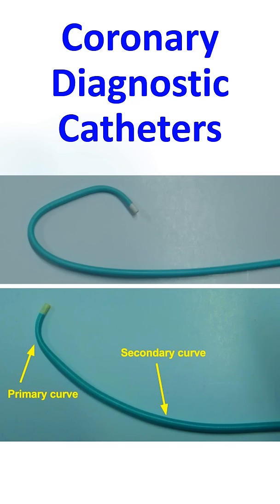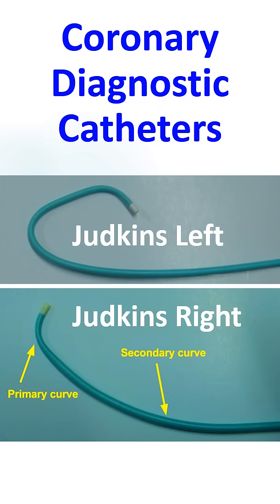The catheter sizes are referred to depending on the secondary curves and the coronary artery for which it is meant — for example, JL4. Here are pictures of Judkins left and right coronary catheters, with primary and secondary curves marked for the right coronary catheter.